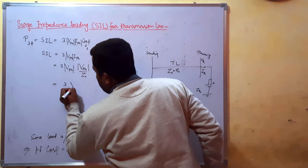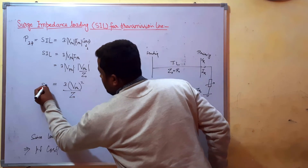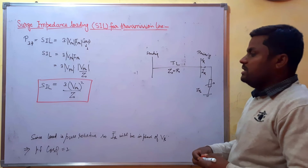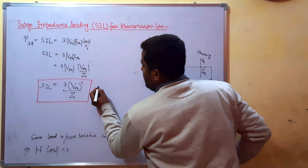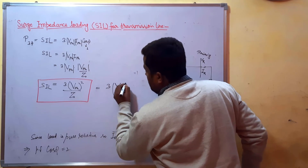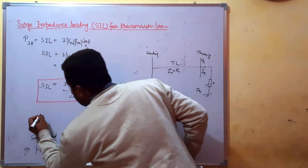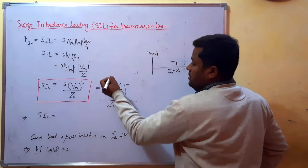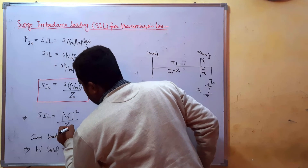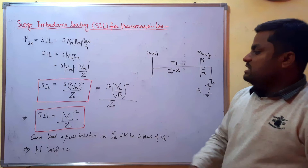Therefore, SIL = 3 × Vphase² / Z0, where Vphase is the receiving end voltage per phase. If we express the receiving end voltage in terms of line voltage, where Vphase = VL / √3, then SIL = VL² / Z0. This is the formula for surge impedance loading of a transmission line.